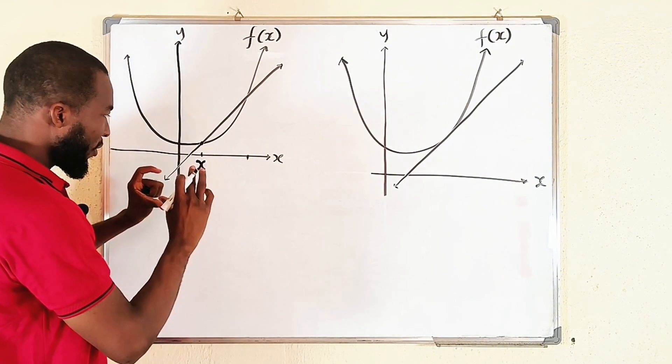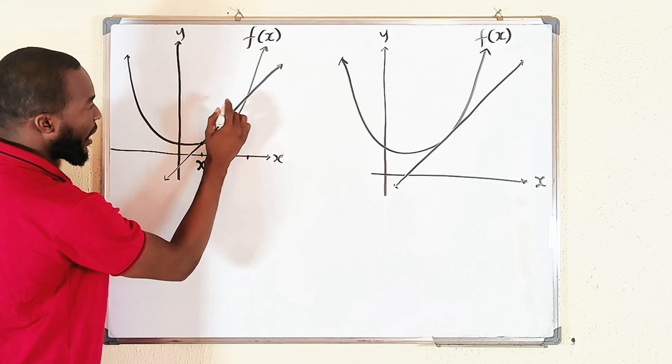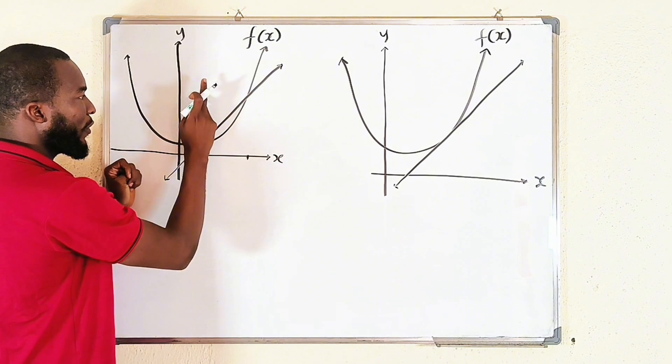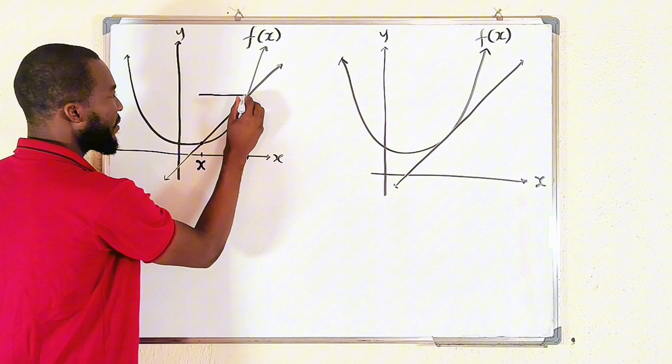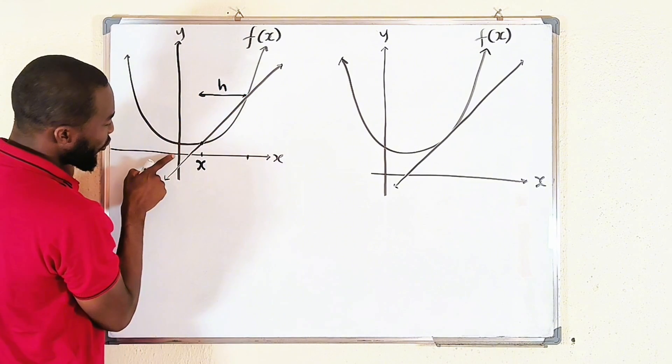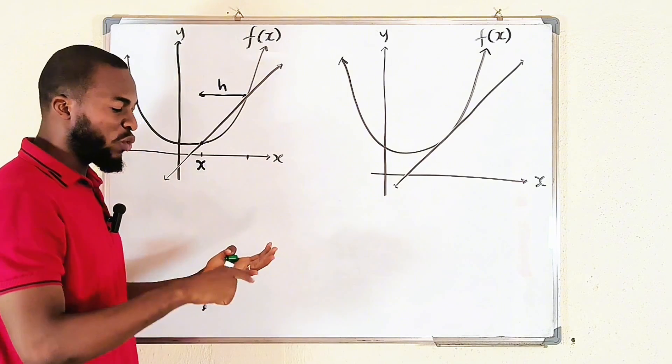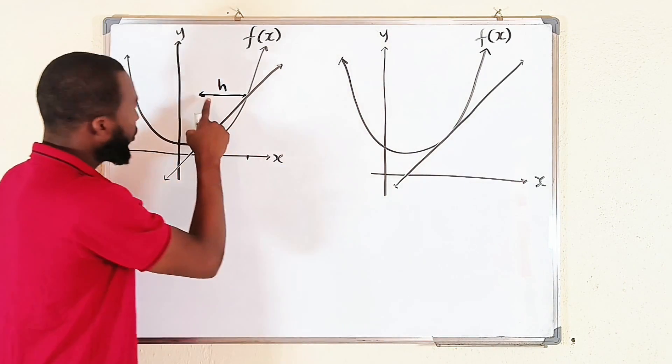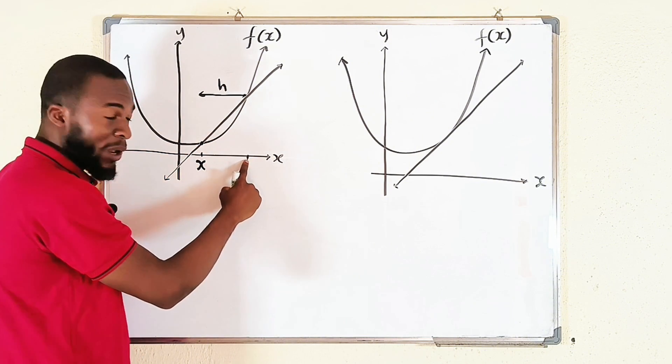First of all, before we name this point, let's assume that the distance from this point to this point is h. That is the horizontal distance. If this is h, because we know from the origin down to the first point is x, x is any value. It could be 1, 2, 3, 4. So if from this first point to the second point is h, then we expect this one to be what?